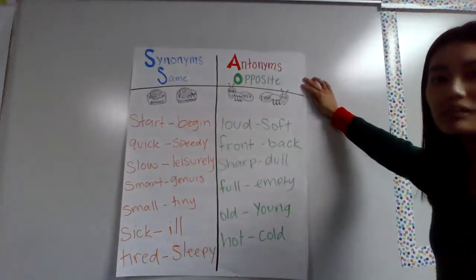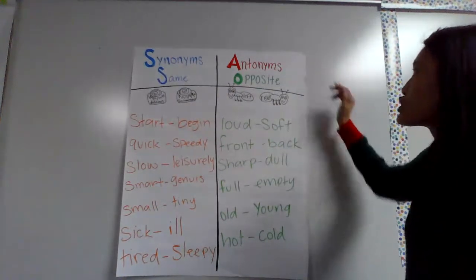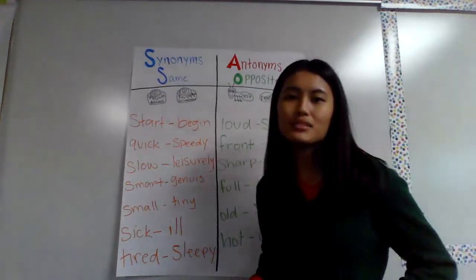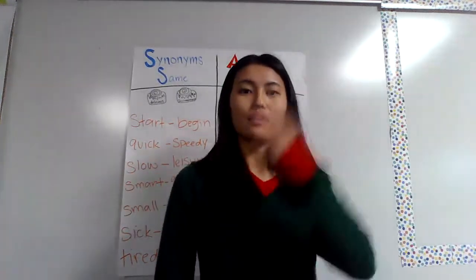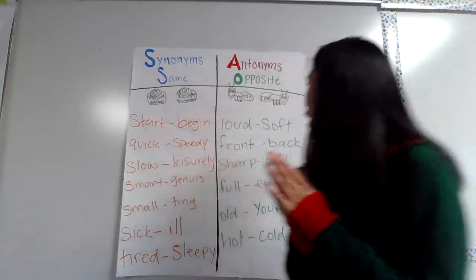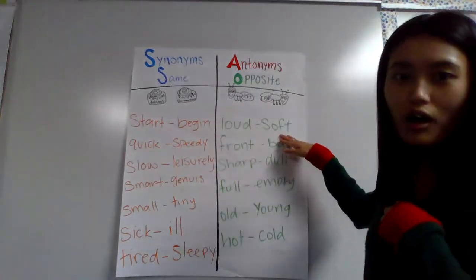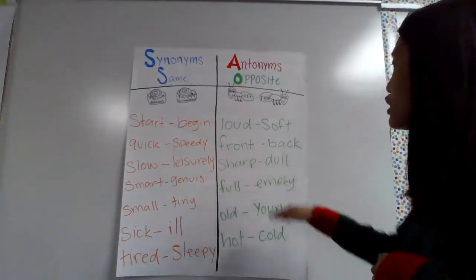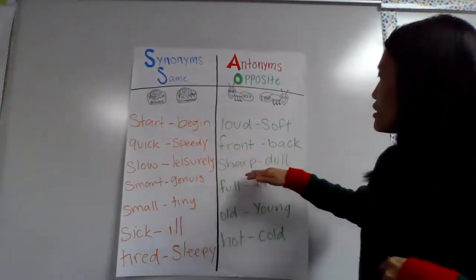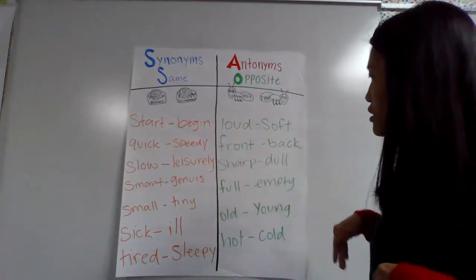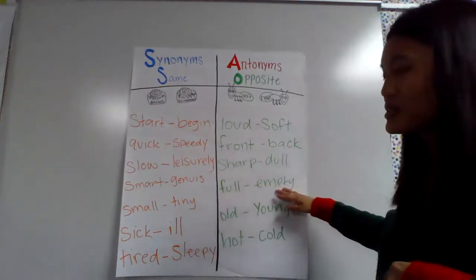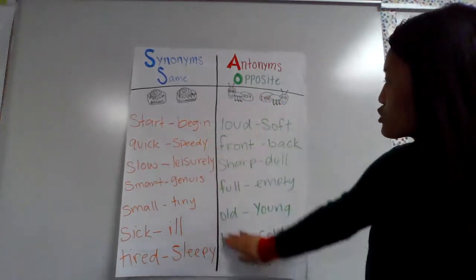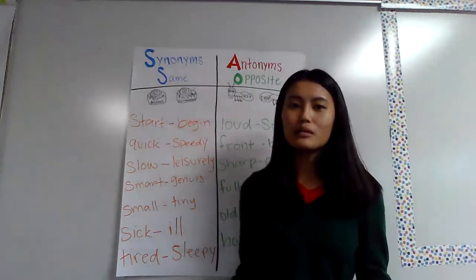Antonyms are words that mean the opposite. So if you have left and right, those words are opposite — they do not mean the same thing. Loud and soft are also opposite meanings. Front and back, sharp and dull, full and empty, old and young, and hot and cold — all of these words are examples of antonyms.